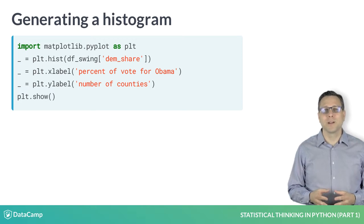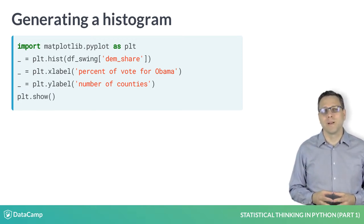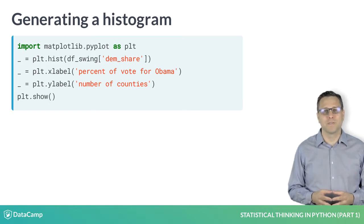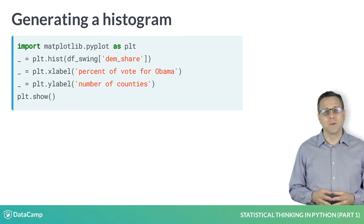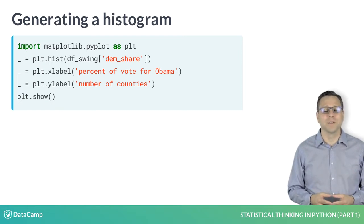We pass it the dem_share column of the data frame. We could also have passed it a numpy array with the same data, and it works just fine. In fact, for this course and its sequel, you can use data frames and numpy arrays interchangeably.